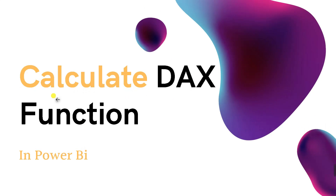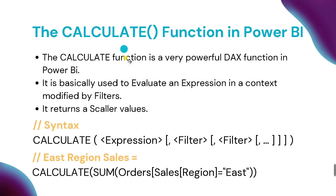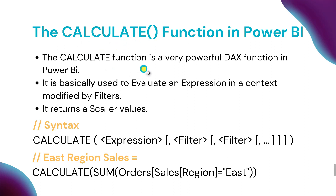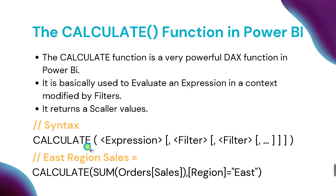The next most important DAX function is CALCULATE. The CALCULATE function is used to evaluate an expression in a context modified by filters. Suppose you want to calculate something from a table by applying some filters — in that case you use CALCULATE. The return type of CALCULATE is a scalar value, meaning it returns a single value. This is one of the most commonly used and most important DAX functions in Power BI.